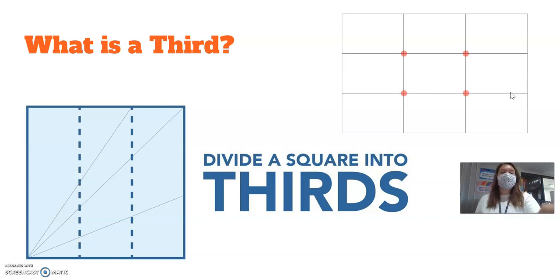So what happens, these four points where the lines intersect, this is the area where you are going to line up your subject.